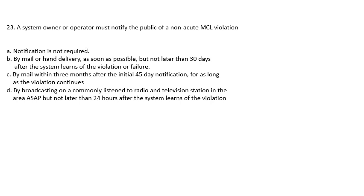Question 23: A system owner or operator must notify the public of a non-acute MCL violation within: notification is not required; by mail or hand delivery as soon as possible but not later than 30 days after the system learns of the violation; by mail within three months after the initial 45-day notification; or by broadcasting on a commonly listened-to radio and television station ASAP but not later than 24 hours. The answer is 30 days, as a Tier 2 violation.